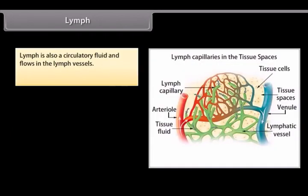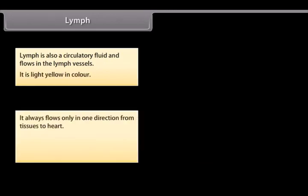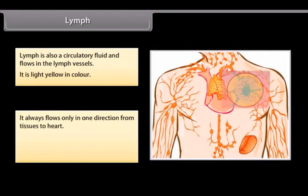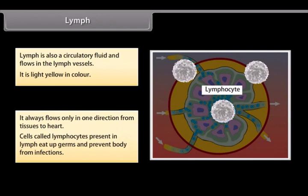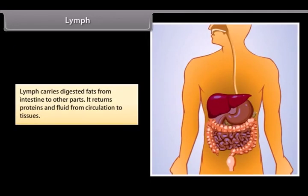Lymph. Lymph is also a circulatory fluid and flows in the lymph vessels. It is light yellow in color. It always flows only in one direction from tissues to heart. Cells called lymphocytes present in lymph eat up germs and prevent body from infections. Lymph carries digested fats from intestine to other parts. It returns proteins and fluid from circulation to tissues.